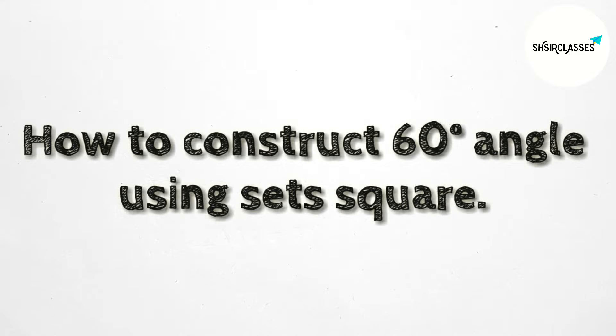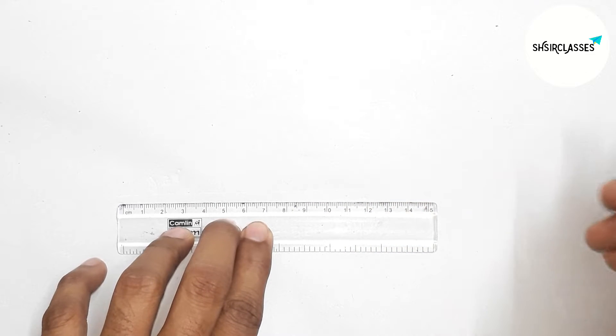Hi everyone, welcome to SI Share Classes. Today in this video, how to construct 60 degree angle using set square in easy way. So please watch the video till the end. So let's start the video.